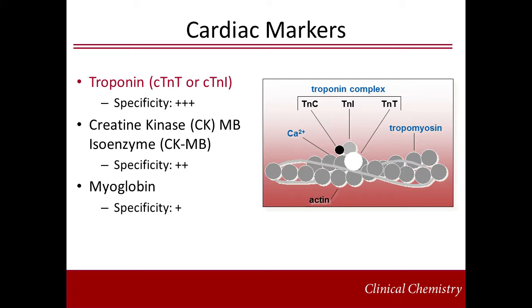Troponin I and T are both structural biomarkers of cardiac necrosis and exhibit exquisite myocardial specificity. Presently, most laboratories run a troponin assay — either troponin T or troponin I — and may also offer testing for CKMB and/or myoglobin. Troponin demonstrates improved myocardial specificity and sensitivity over both CKMB and myoglobin, and essentially obsoletes the utility of either marker.